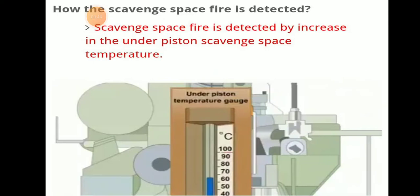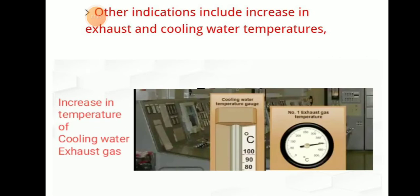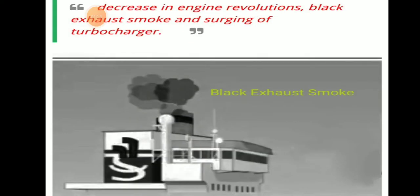Scavenge space fire can be detected when the under-piston scavenge space temperature increases — that is the first indication of scavenge space fire. Other indications include increasing exhaust temperature and cooling water temperature. There will also be a decrease in engine revolution, meaning RPM is reduced.